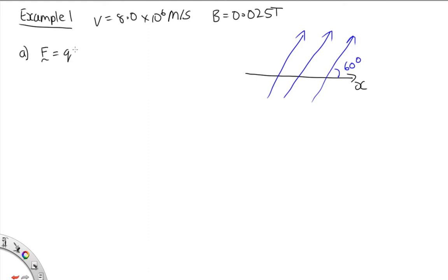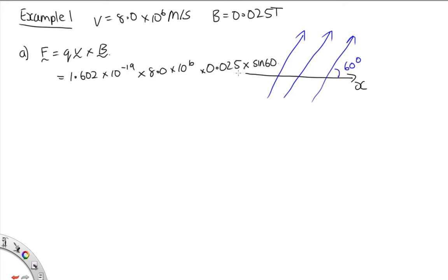F = qv × B. Substituting in — this is an electron so its charge is 1.602 × 10⁻¹⁹ C, velocity is 8.0 × 10⁶ m/s, magnetic field is 0.025 T. Since it's a cross product, we multiply by sine of the angle between them. Solving that gives 2.77 × 10⁻¹⁴ N. The direction is into the screen. When using the right-hand rule, remember that electrons are negative, so it will have the opposite direction to a positive charge.